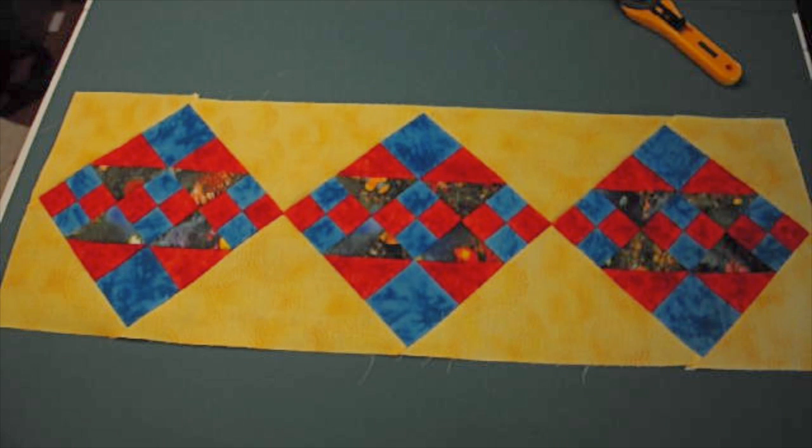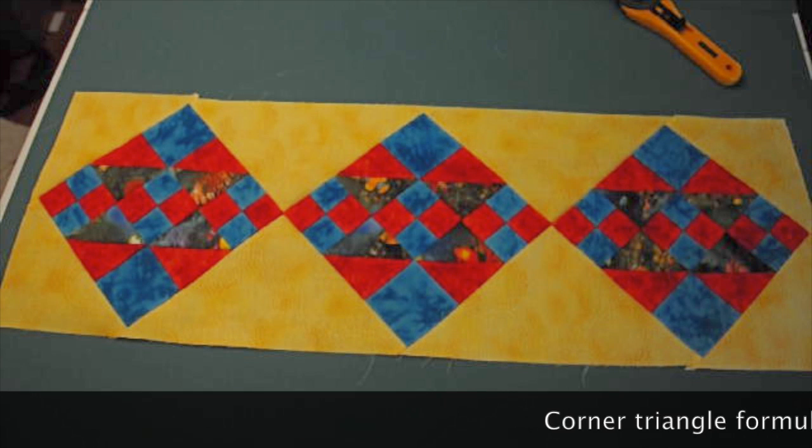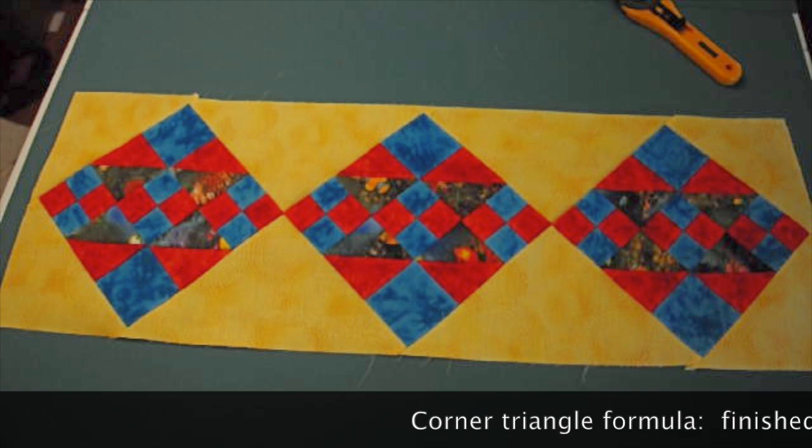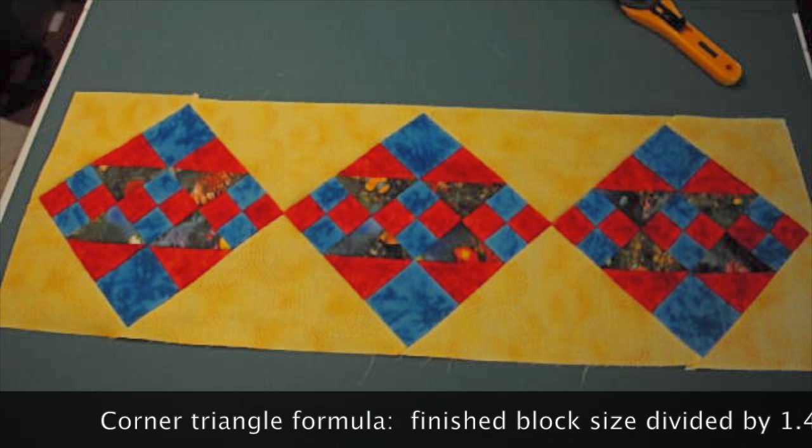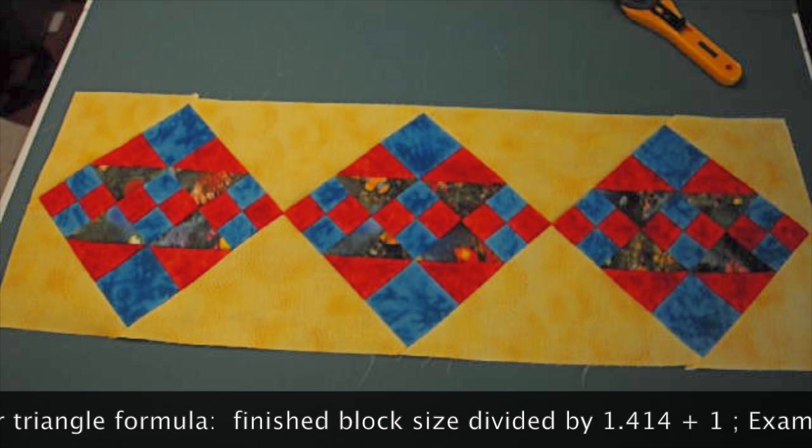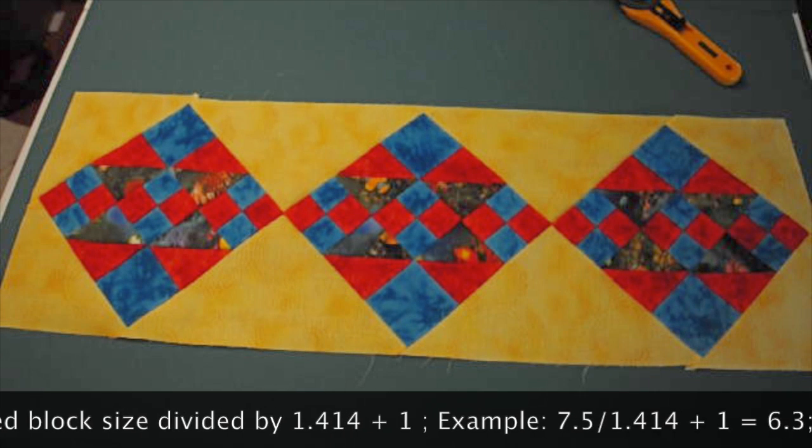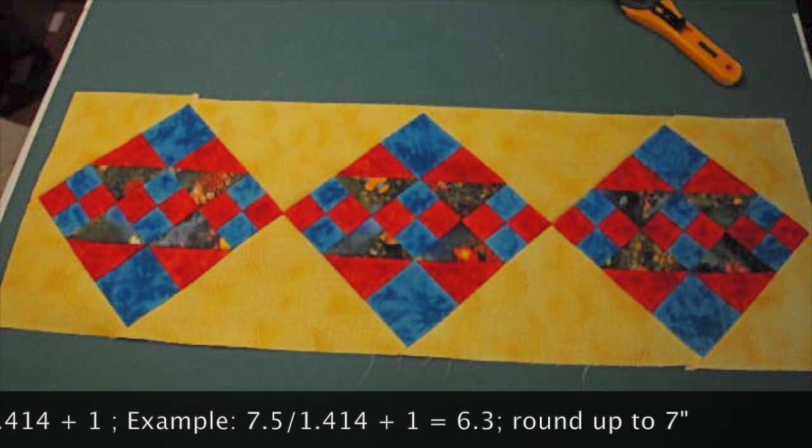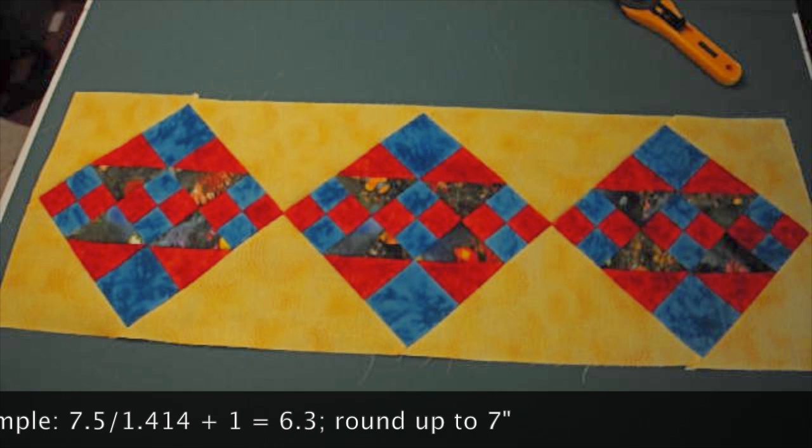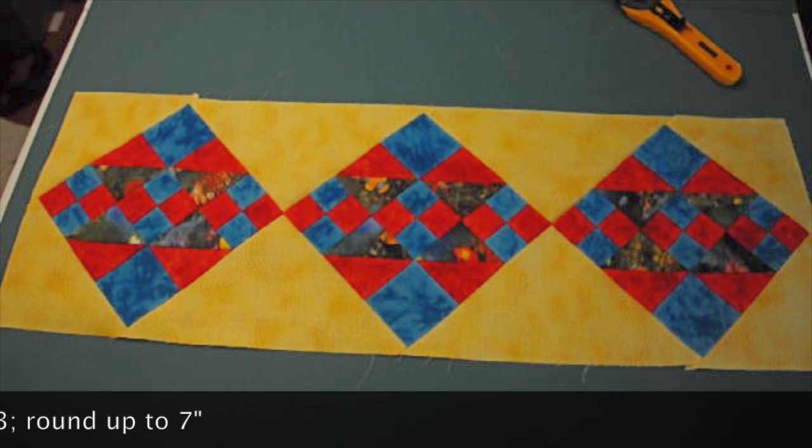To make this we will be cutting two squares and only making one diagonal cut. There is a formula to figure out what size that square will be. It's very much like the other formula, except this time you'll be taking your finished block size and dividing it by 1.414 and adding one inch for a seam allowance. So in this example you will take 7.5 divided by 1.414 plus 1, equals 6.3. And again, you want to round up to the next whole number, which would be 7. So the size blocks we need to cut is 7 inches and we will need to cut two of them.